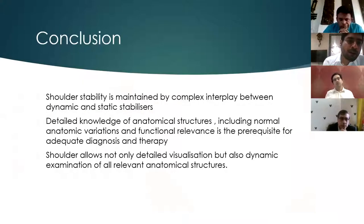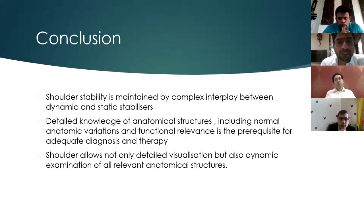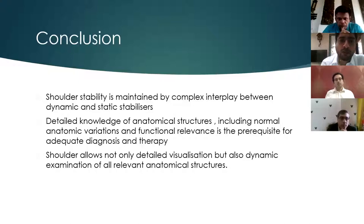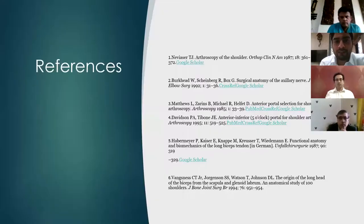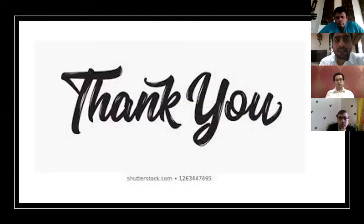In conclusion, shoulder stability is maintained by a complex interplay between the dynamic and static stabilizers. Detailed knowledge of anatomical structures, including normal variation and functional relevance, is a prerequisite for adequate diagnosis and therapy. Shoulder arthroscopy allows not only detailed visualization but also dynamic examination of all relevant anatomical structures. Thank you so much.